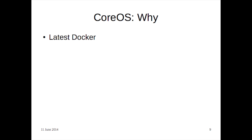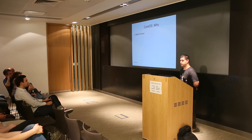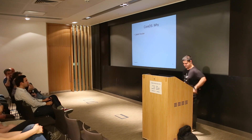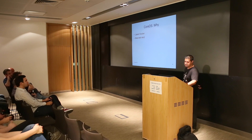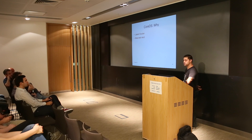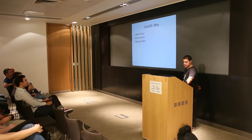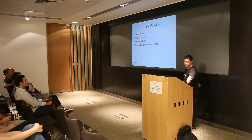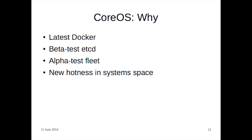Why might you run CoreOS? At the moment it has the latest version of Docker. It has a beta version of EtcdD — though it's kind of like a Gmail beta label, so it's actually pretty stable; I've not seen any failures of EtcdD myself. There's an alpha test version of Fleet, and it's kind of the hot thing in the systems space right now.